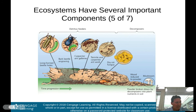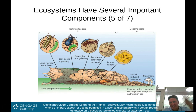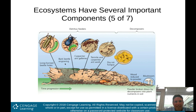This chart shows how organic matter is decomposed over time. A tree dies; first, longhorn beetles show up and start to decompose the wood. Then the bark beetle shows up, then carpenter ants, then termites, then fungus.